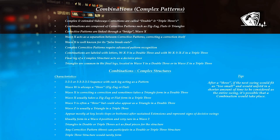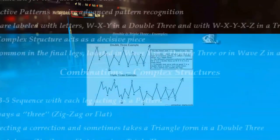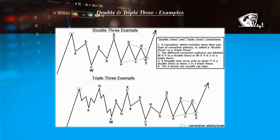Tip: After a 3, if the next swing would fit as too small and would unfold in a shorter amount of time to be considered as the entire swing, it's possible that a combination would take place. Here are some examples of double and triple 3 structures.